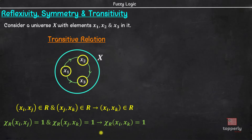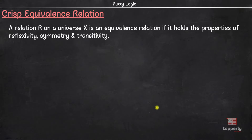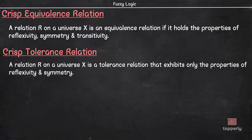Now that we have learned reflexive, symmetric, and transitive properties of relations, let us define equivalence relation. An equivalence relation is a relation that satisfies the properties of reflexivity, symmetry, and transitivity. Before seeing an example, let us also define what a crisp tolerance relation is. A tolerance relation is a relation that exhibits only the properties of reflexivity and symmetry, but not transitivity.